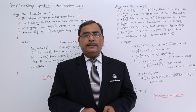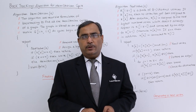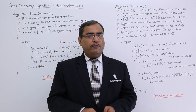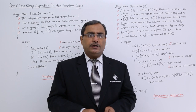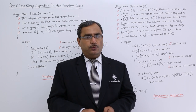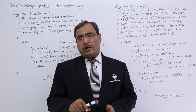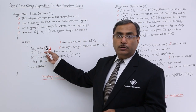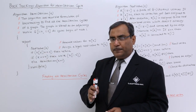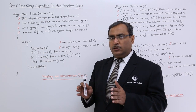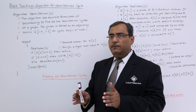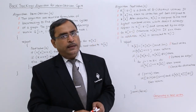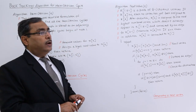In this session, we are discussing the Hamiltonian cycle algorithm. The algorithm will have two functions: one is the Hamiltonian function and another is the next value function. We are going to start with the next value function, because in the Hamiltonian function, next value is called. If you know the purpose of next value and the code within it, that will help us understand the overall algorithm better.